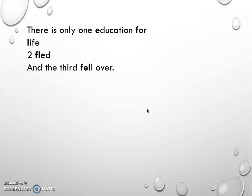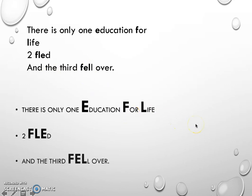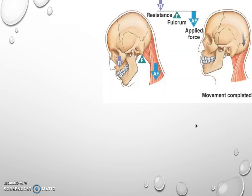One of the ways that you can remember them is: there is only one education for life, two fled, and the third fell over. So what that does, it just gives me the order of E, F, and L. Education for life is one, two fled so that's fulcrum, load, and effort, that's class two. And for the third is F, E, and L - fulcrum, effort, and load. It's entirely up to you what you use but I think it would be really important to note something like that down, take charge of that, and then you'll be a little bit more confident when you're going into the exams.